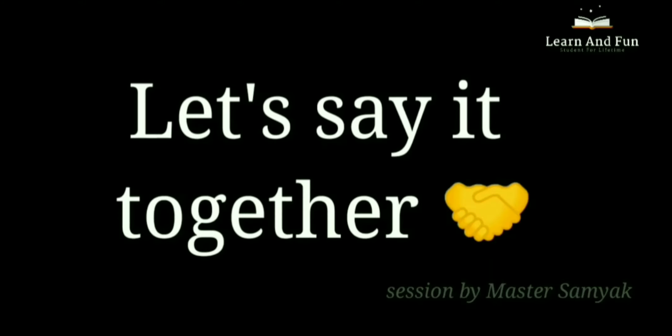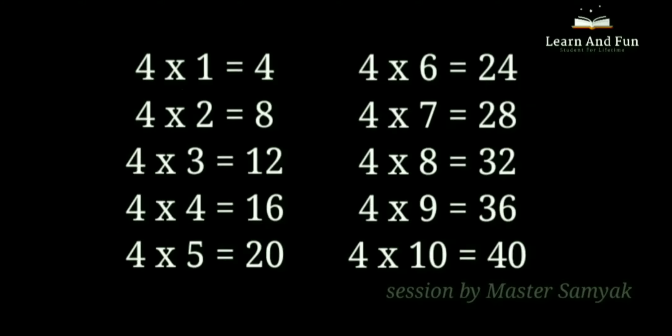Let's say it together. 4 ones are 4. 4 twos are 8. 4 threes are 12. 4 fours are 16. 4 fives are 20. 4 sixes are 24. 4 sevens are 28. 4 eights are 32. 4 nines are 36. 4 tens are 40.